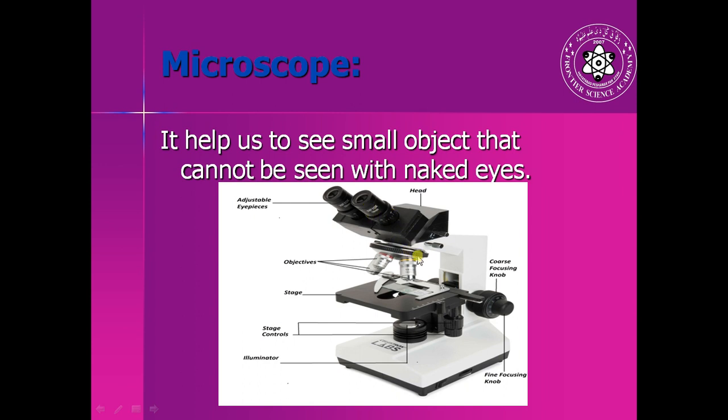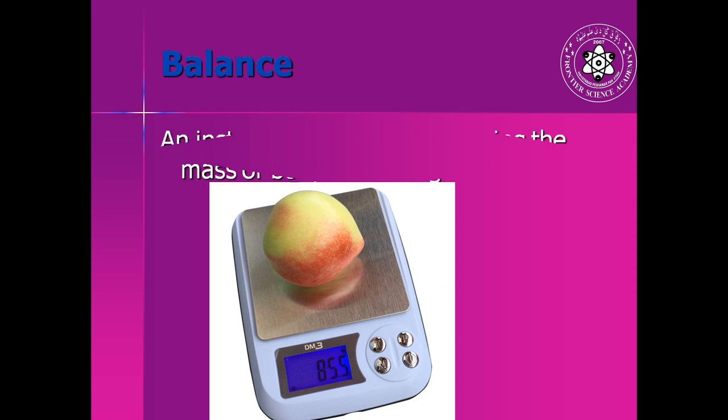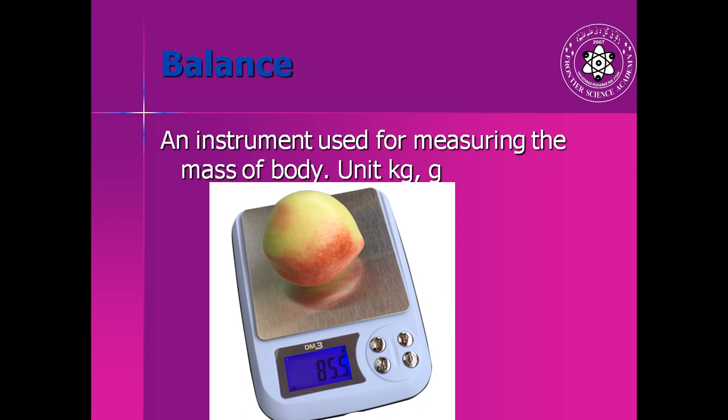Another instrument is the balance. This instrument is used for measuring the mass of a body. The mass of the body is measured in units kilogram and gram - kilogram is a bigger unit and gram is a smaller unit. One kilogram is equal to 1000 grams.